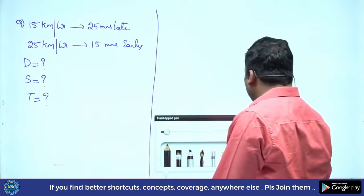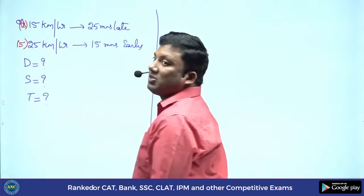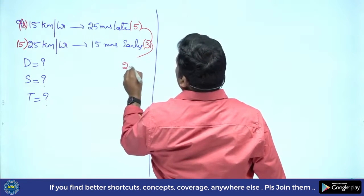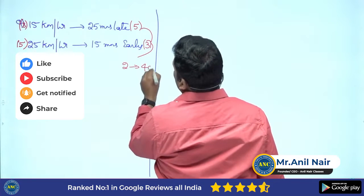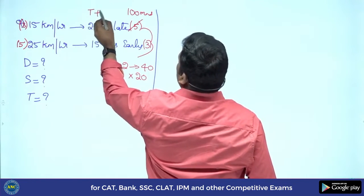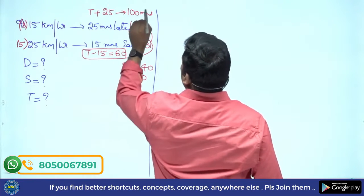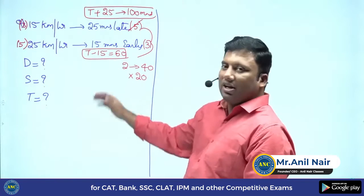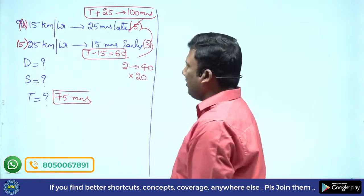Students who understood the concept can go ahead and solve it. Speed ratio of 15 and 25: three 5s are 15, five 5s are 25 — speed ratio is 3:5. Time period ratio is 5:3, difference is 2. In the question the difference is 25+15 = 40 minutes, so multiply by 20. 5×20 = 100 minutes; t+25 = 100, so t = 75 minutes.